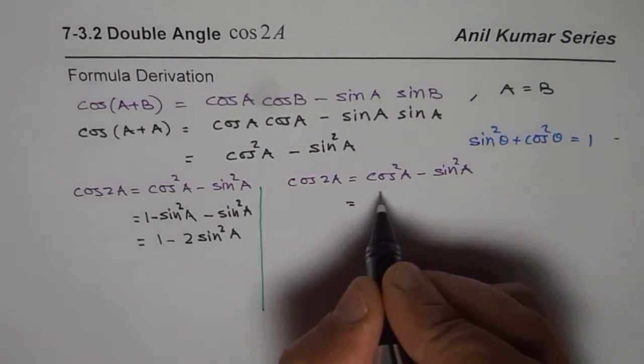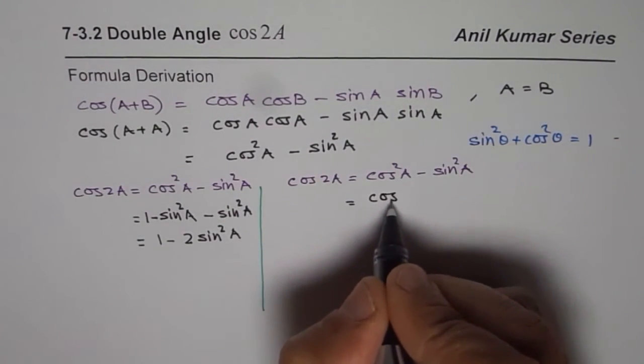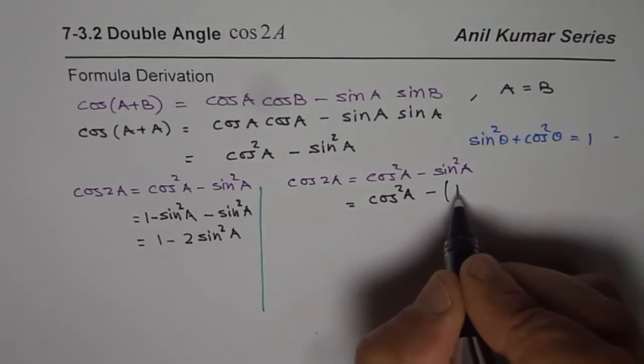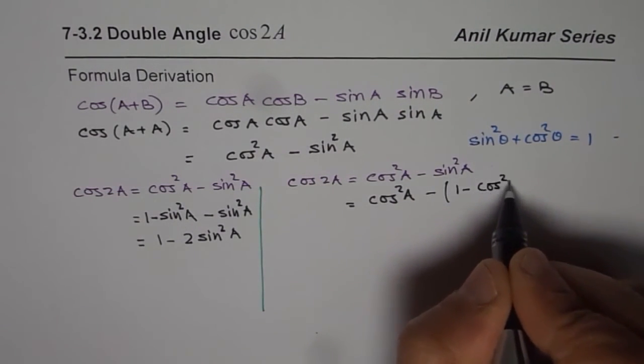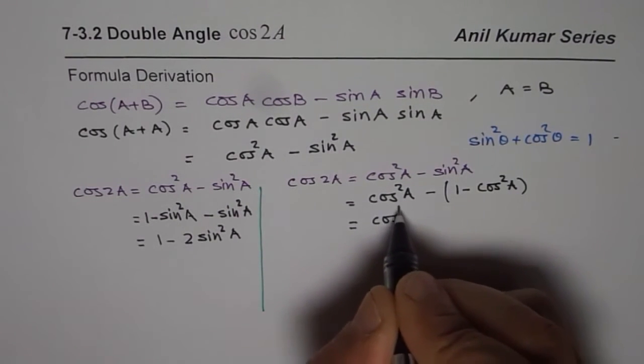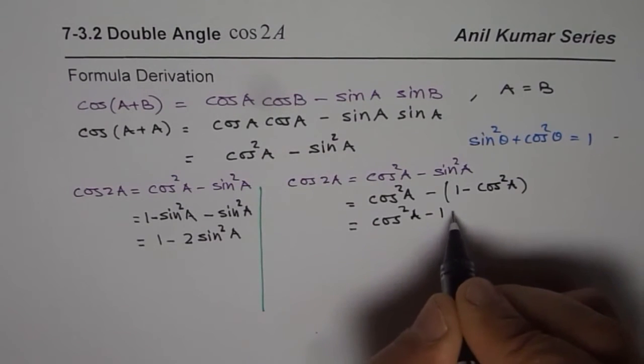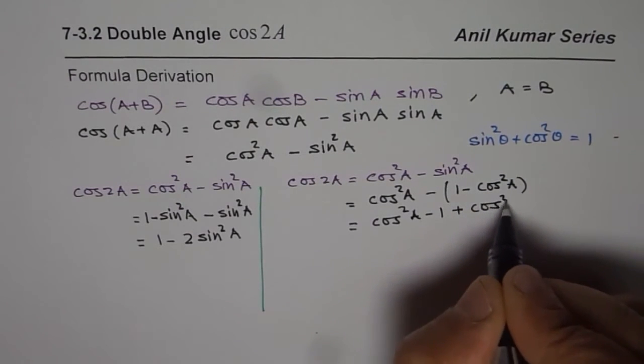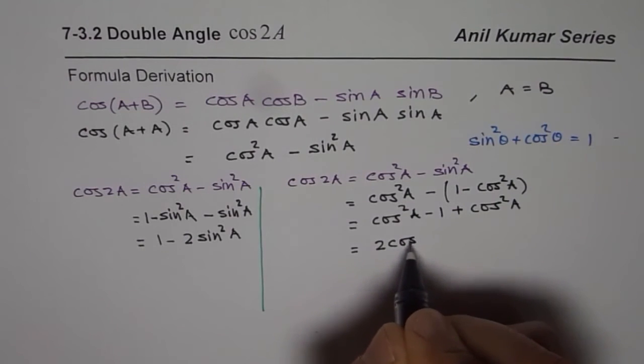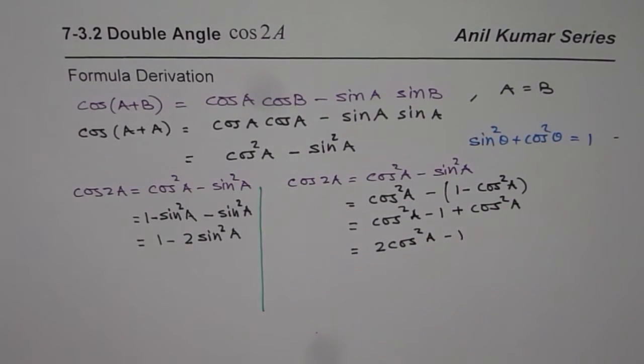In this equation, I am going to retain cos square A as such and change sin square A as 1 minus cos square A. Then when I open this bracket, I get cos square A minus 1 plus cos square A, and that gives me 2 cos square A minus 1.